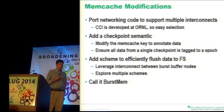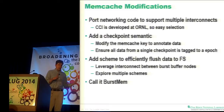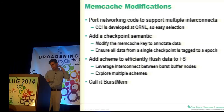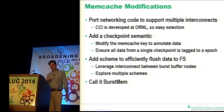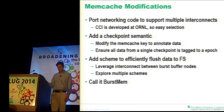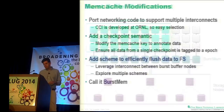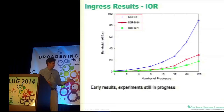The first thing we had to do was port Memcache to use high-performance interconnects. CCI is a technology at ORNL — a lightweight RDMA abstraction layer that can run on Ethernet, Gemini, and Ares, making this much more portable. We need to add a checkpoint semantic: the ability to embed data into the key describing the application data being written, and a way to tag an entire checkpoint as part of a single epoch so we can stream those out into storage. Then we need a scheme to flush data to a file system. It's called BurstMem, and at present it only writes to memory.